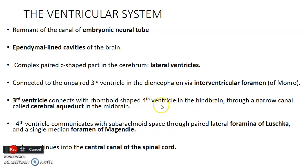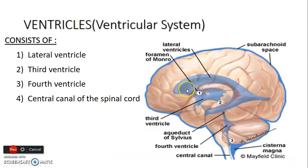The upper portion of the fourth ventricle is on the pons while the lower portion is on the medulla. The fourth ventricle communicates with the subarachnoid space through two lateral foramina of Luschka and a single median foramen of Magendie. The lateral ventricle has an anterior horn, a posterior horn, an inferior horn, and the atrium - those are the parts of the lateral ventricle.